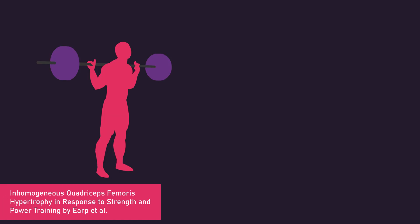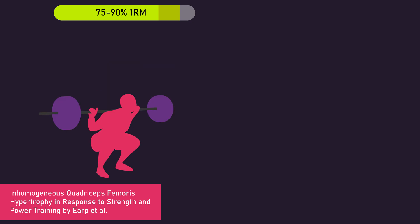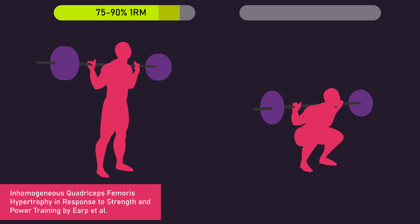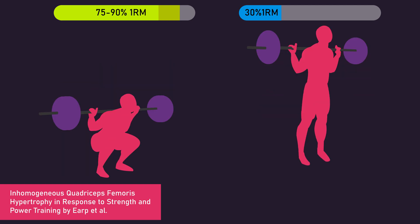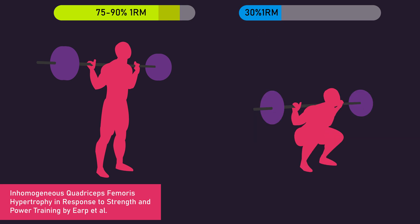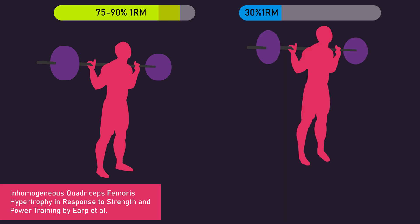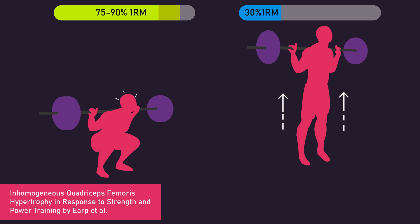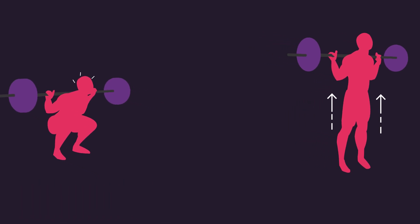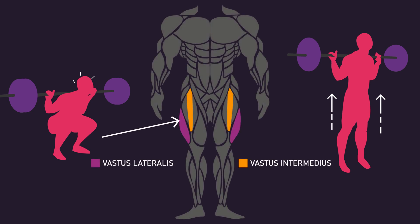Earp and colleagues compared heavy parallel back squat training using a 75–90% one-rep max load to jump parallel back squat training using a 30% one-rep max load, for regional growth of the quadriceps muscles. The jump squats were performed very far from muscular failure — just explosive jumping repetitions — whereas heavy squat repetitions would have been substantially slower as they trained closer to failure. Heavy parallel back squat training produced greater upper region growth of the vastus lateralis and vastus intermedius compared to jump squat training.